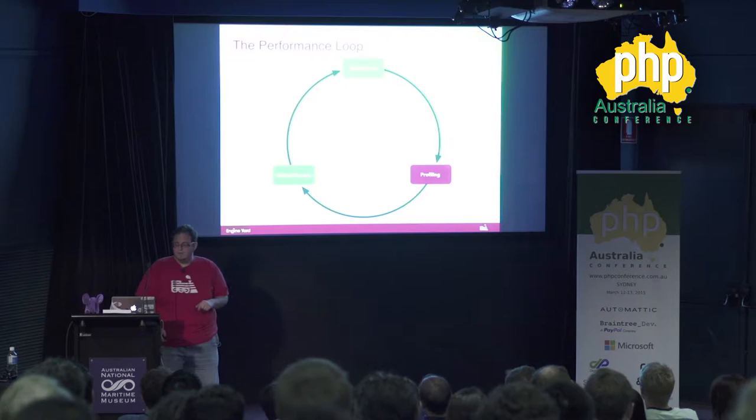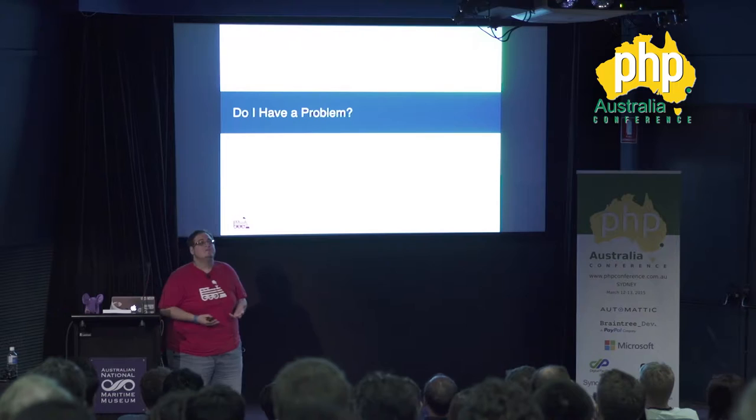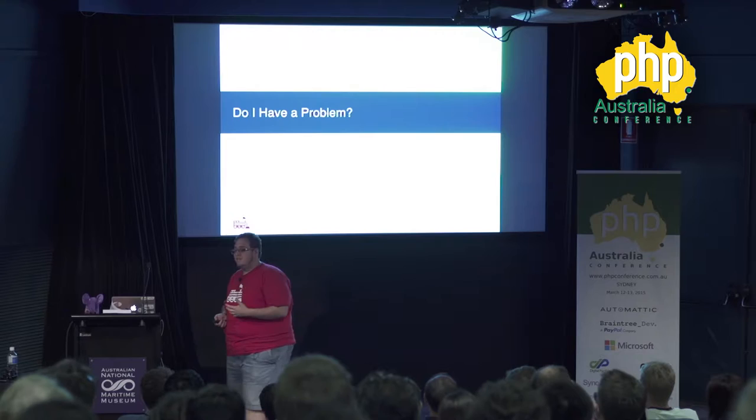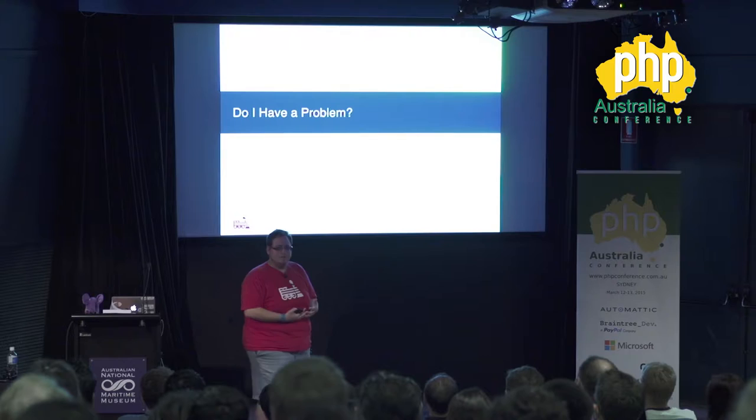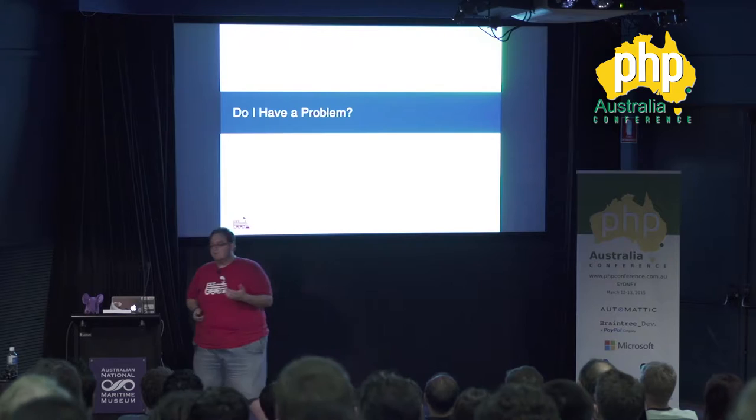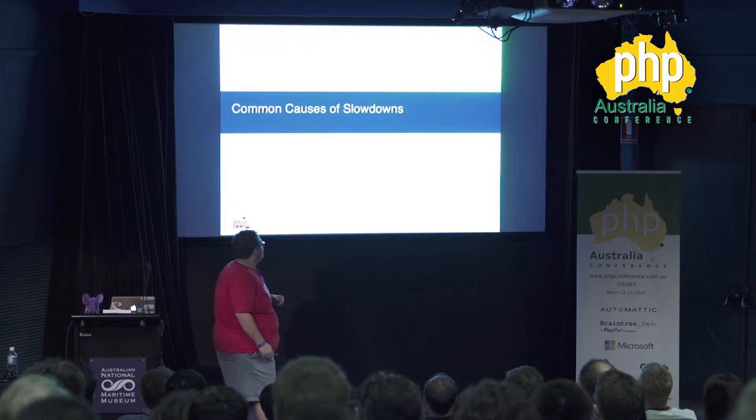When should you profile your code? First question: do I have a problem? The primary issue I see is that people assume they have a problem without actually quantifying it. What you need to do first is decide what you're expecting from your application. Do you need 100 concurrent users with sub-10 millisecond response times? Once you've decided what that metric is, then you can run your benchmarks and actually see: do I have a problem, and if so, how big?